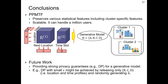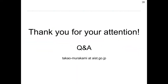Let me summarize this talk. We proposed PPMTF, which preserves various statistical features including cluster-specific features. It is also scalable and we can handle a million users. For future work, we would like to provide strong privacy guarantees such as differential privacy for the generative model. For example, differential privacy with small epsilon might be achieved by releasing only B, C, and D, and randomly generating A. We would like to investigate how much epsilon can be reduced by this approach. Thank you for your attention.